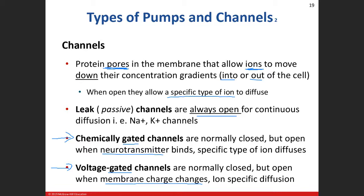With chemically gated channels, we need neurotransmitters. With voltage-gated channels, we need to change the charge of the plasma membrane — that will cause that gate to open. Whatever ion that channel is specific for will be allowed to pass through: if it's a voltage-gated sodium channel, sodium travels through; if it's a chemically gated chloride channel, chloride enters. So we have two pumps — the sodium-potassium ion pump and the calcium pump, both requiring ATP and moving things against the concentration gradient — and three types of channels: leak, chemically gated, and voltage gated.